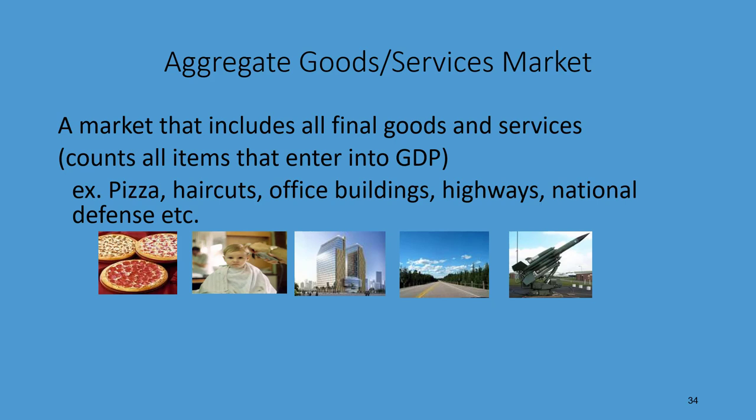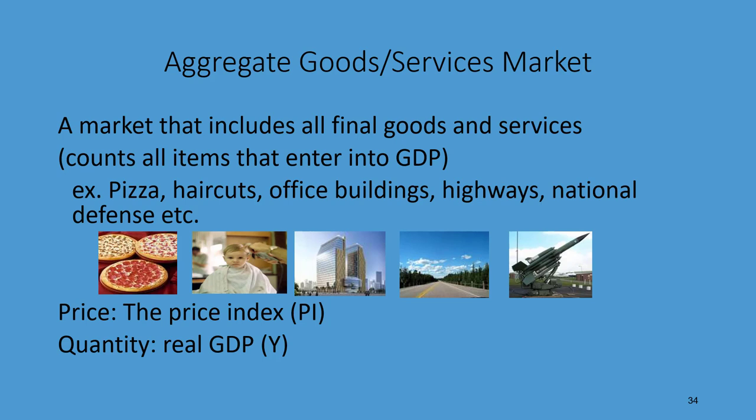We're going to be talking about the demand for things like pizza and haircuts, or things that households like to buy. Also things that businesses like to buy, like office buildings, or things that the government likes to buy, whether it be highways or national defense spending. So this is going to be the demand for all things and the supply of all things. The price in the aggregate goods and services market is the price index, abbreviated PY. And the quantity in the goods and services market is going to be real GDP, or Y.